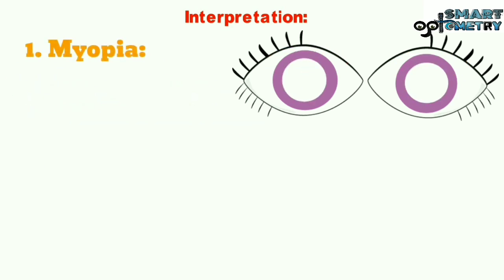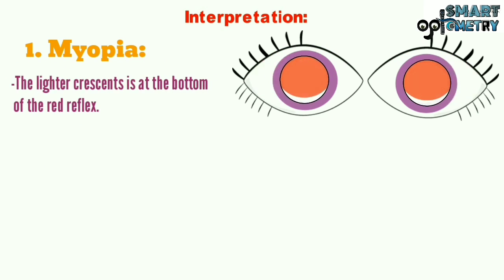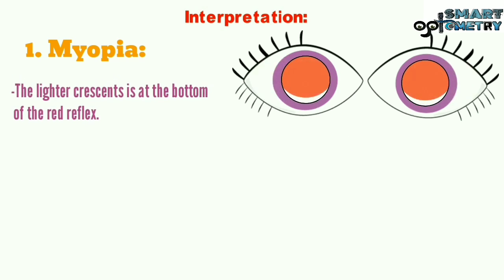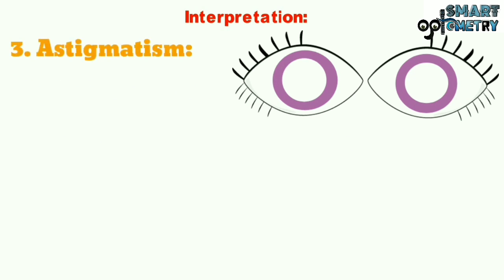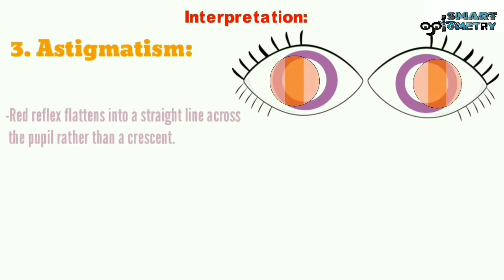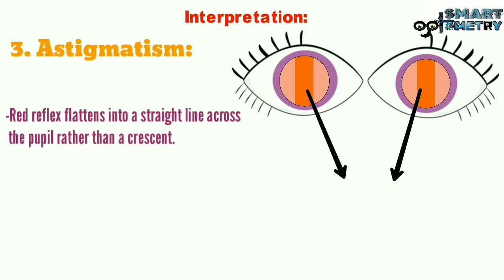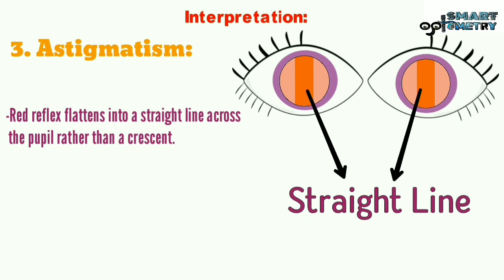2. Myopia: The lightened crescent is at the bottom of the red reflex. 3. Astigmatism: The red reflex flattens into a straight line across the pupil rather than a crescent.